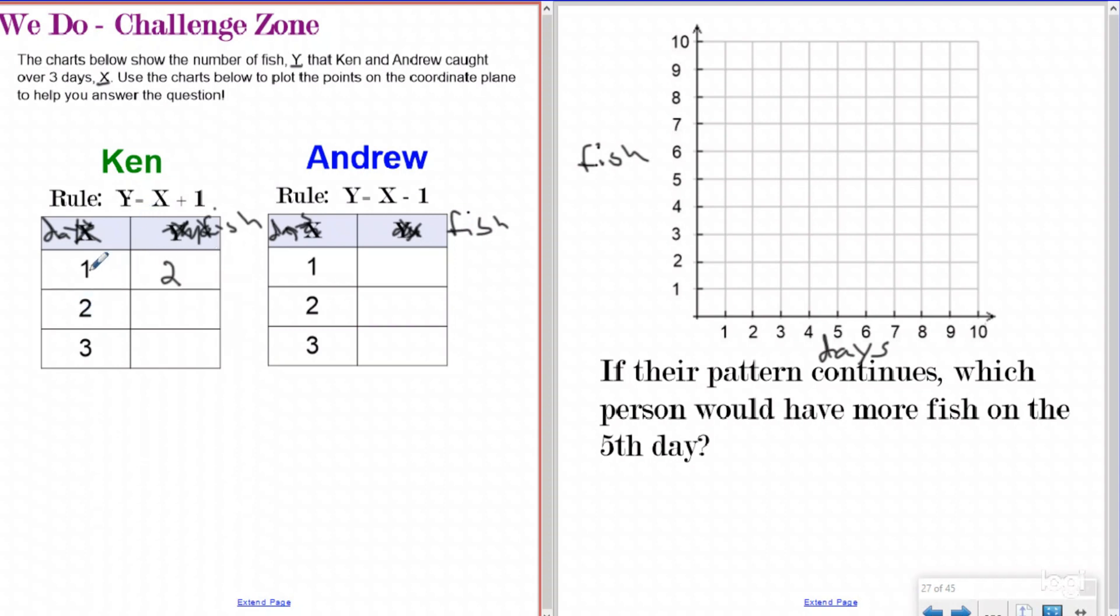On the second day, if X was two and I plug it in, two plus one is three. So Ken caught three fish, right? So the ordered pair would be two, three. And on the third day, if X was three, three plus one is four. So we're going to say Y equals four.